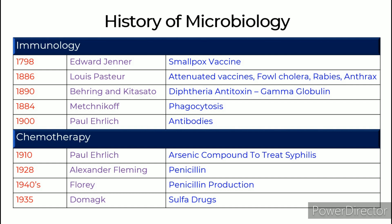Chemotherapy: In 1910, Paul Ehrlich discovered an arsenic compound to treat syphilis. In 1928, Alexander Fleming discovered penicillin. In the 1940s, Florey started penicillin production. In 1935, Domagk produced sulfa drugs.